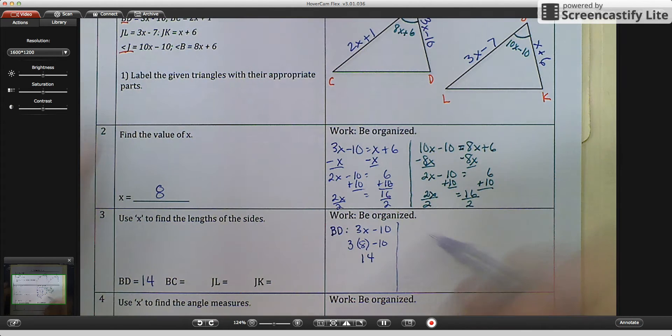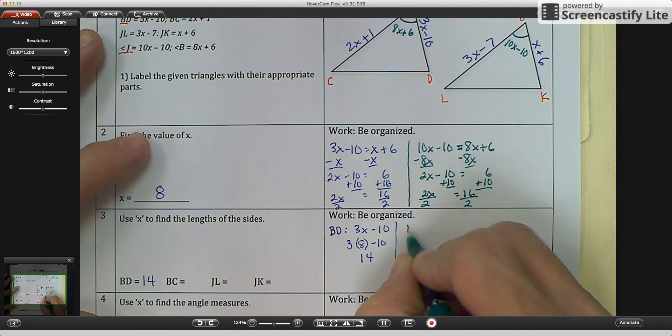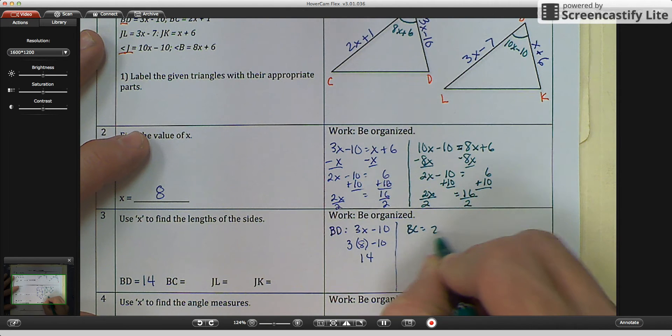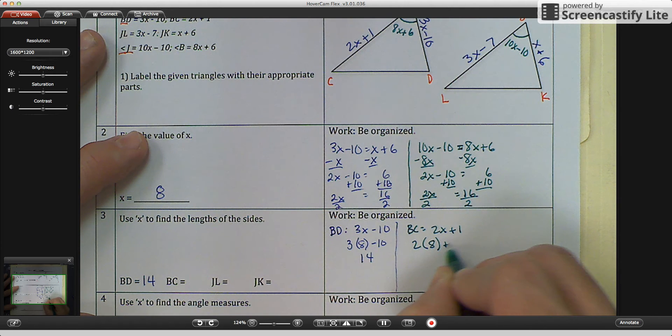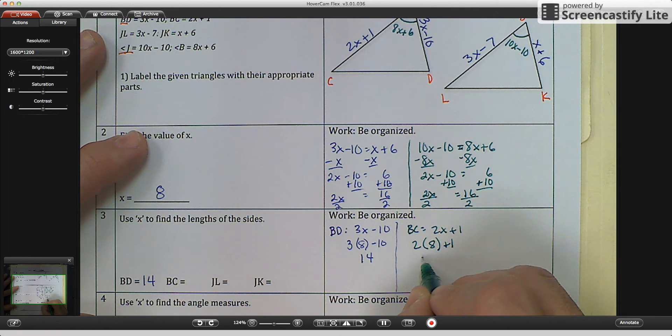I'm going to go to the next one. And I'm going to go for BC. So I have found BC. And again, I'm going to label it. Is equal to 2X plus 1. And again, X is 8. So 2 times 8 plus 1 would be 16. Plus 1 is 17.